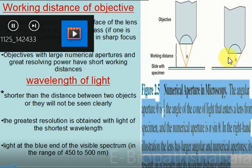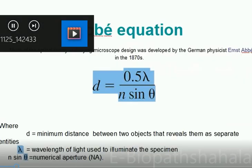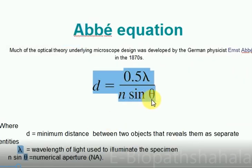As seen in the Abbe equation, n sin theta — theta is inversely proportional to the working distance. If theta is small, the working distance will be more, resulting in less resolving power.